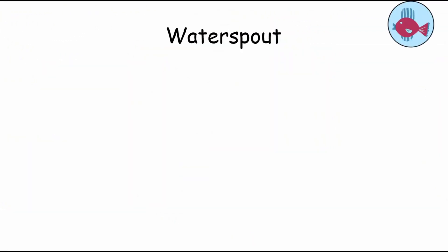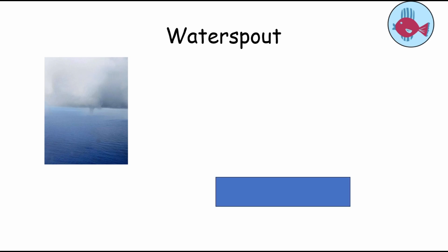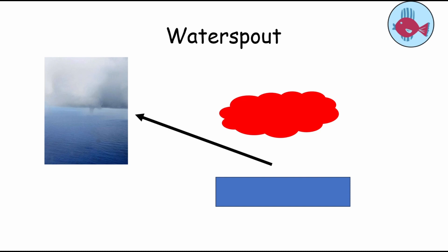A waterspout is a weather phenomenon characterized by a funnel-shaped cloud extending downward from a cumuliform cloud to the surface of a body of water, such as a lake or ocean. Waterspouts typically form in areas of warm, moist air over relatively cooler waters, often in association with thunderstorms or other convective activity. They are similar to tornadoes, but occur over water instead of land.